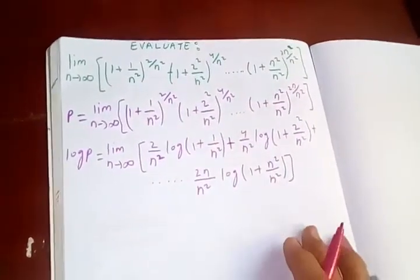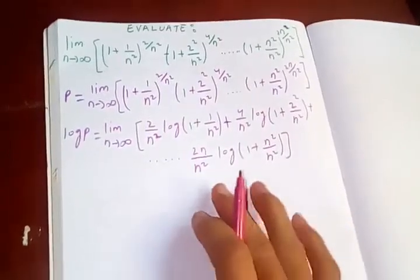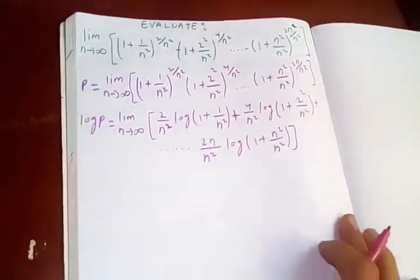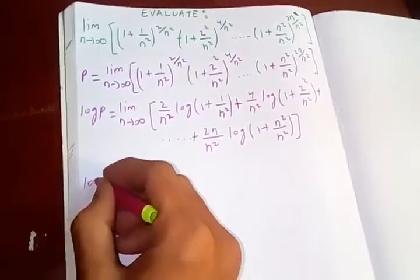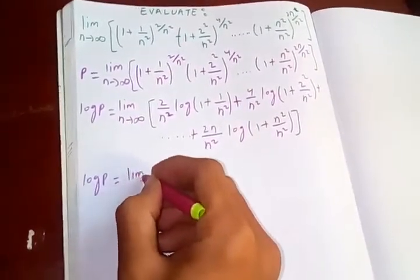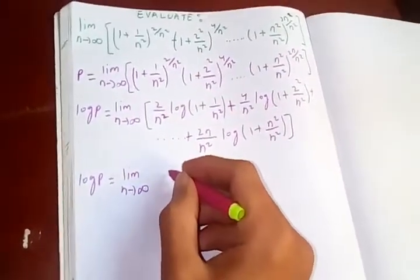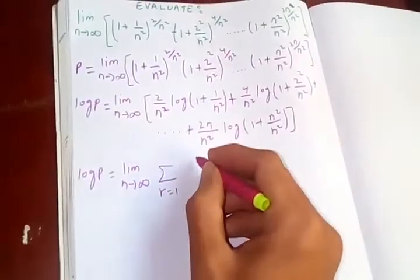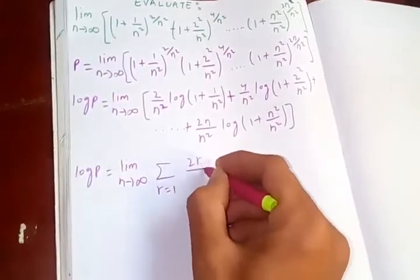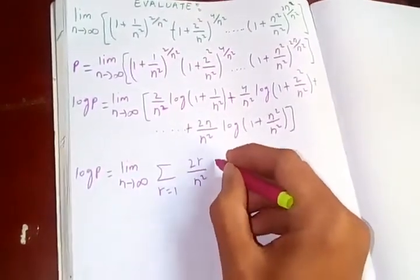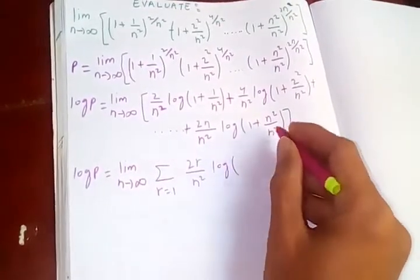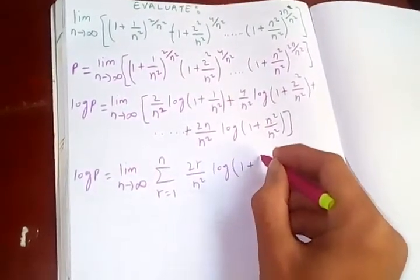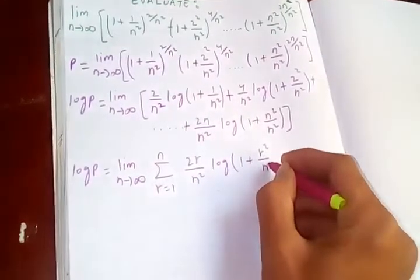We have split the limit into this summation form. So log p equals the limit as n tends to infinity of the sum from r = 1 to n of (2r/n²)·log(1 + r²/n²).